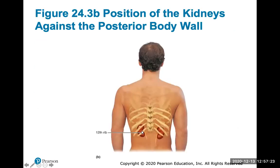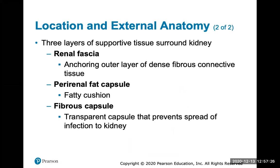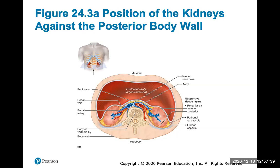There are three layers of supporting tissue around the kidney: the fascia, the fat capsule, and then the fibrous capsule, which is a transparent capsule that prevents the spread of infection to the kidney. Here's a cross-section transverse view of where the kidneys lie in what we call the retroperitoneal space — outside the peritoneal cavity on the back side of the wall.